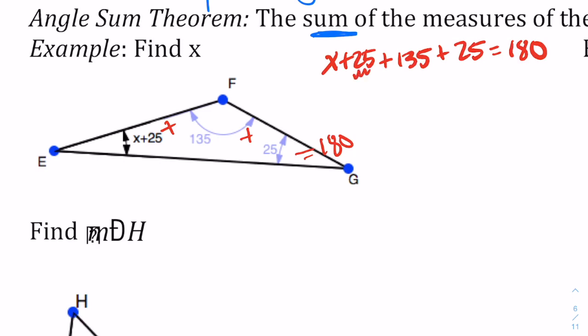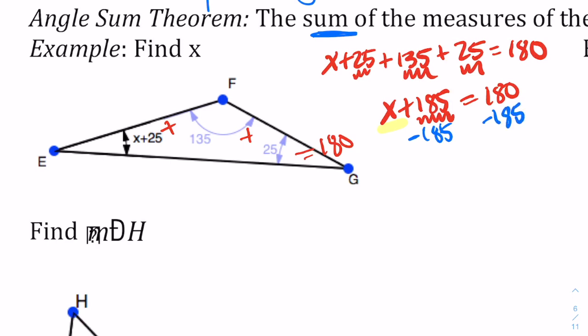So X plus 25 plus 135 plus 25 has to equal 180. Adding the like terms — 25 plus 135 plus 25 gives me 185. So X plus 185 equals 180. To get X alone, we undo adding 185 by subtracting 185, giving us X equals negative 5. Note that X is negative 5, but the angle itself is not negative 5 — if we plug X in, we get negative 5 plus 25, so the angle measurement is 20 degrees.